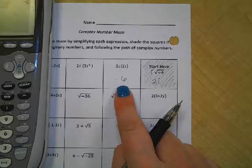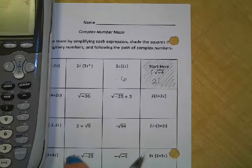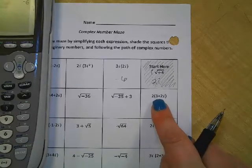So I'm going to go ahead and write down the answer here. Should that box be shaded? No, that's a real number. Negative 6 is a real number. There's no i, so we don't shade that one. That means our maze is going to go to this one next.